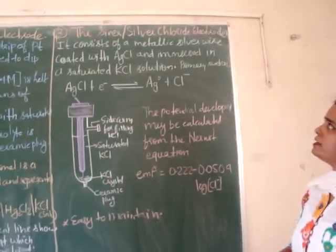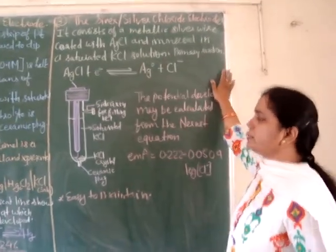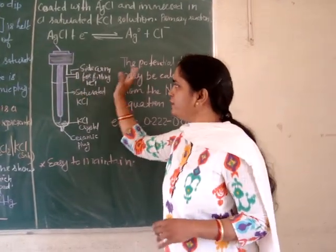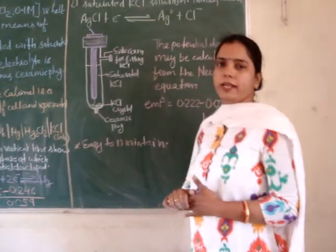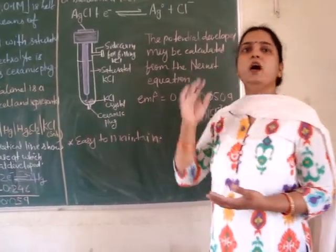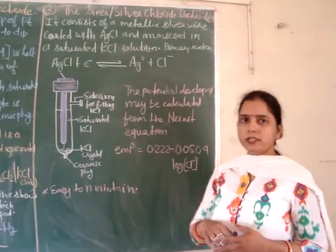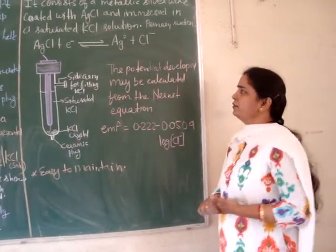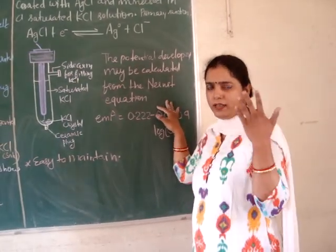The third reference electrode is the silver-silver chloride electrode. This electrode consists of a metallic silver wire that is coated with silver chloride and immersed in a saturated potassium chloride solution. Here again is the side arm for filling potassium chloride solution, and some crystals of potassium chloride are added. A ceramic plug helps to connect with the outside solution. The primary reaction responsible for the generation of potential difference in this silver-silver chloride electrode is: silver chloride accepts electrons and is converted into silver and chloride ions.